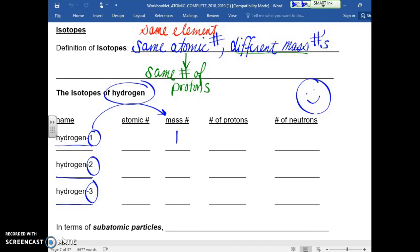Hydrogen-1 has a mass of 1. Hydrogen-2 has a mass number of 2. Hydrogen-3 has a mass number of 3. By the way, these happen to be 2 naturally occurring. This is the one that would be generated, for example, in a laboratory.